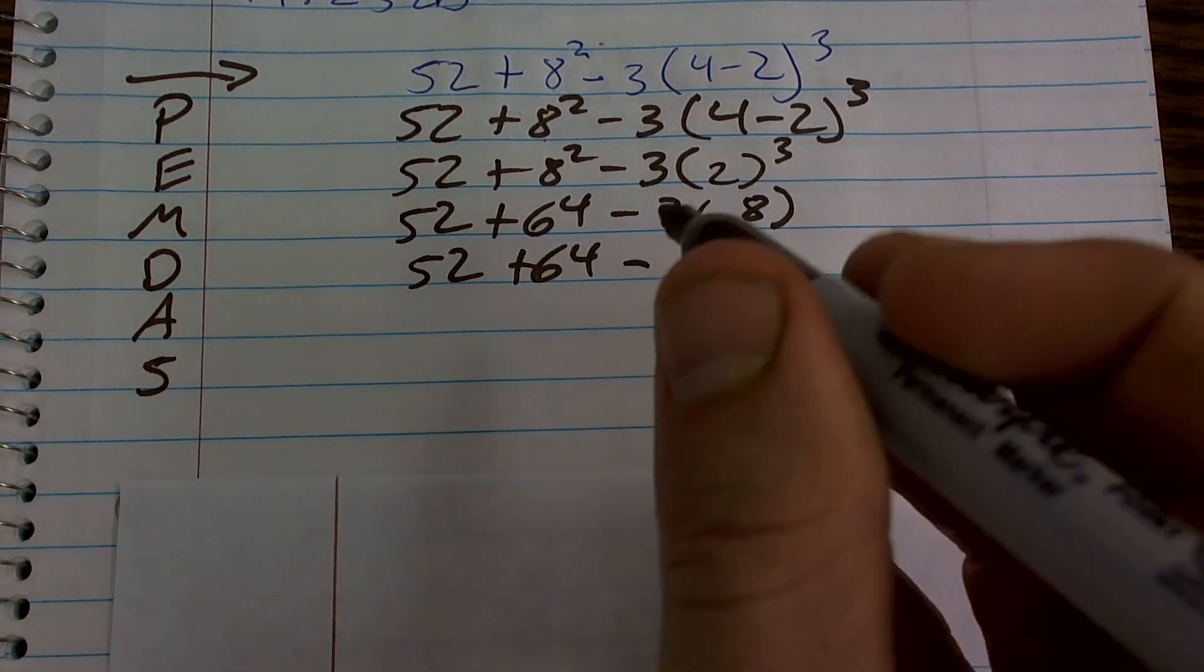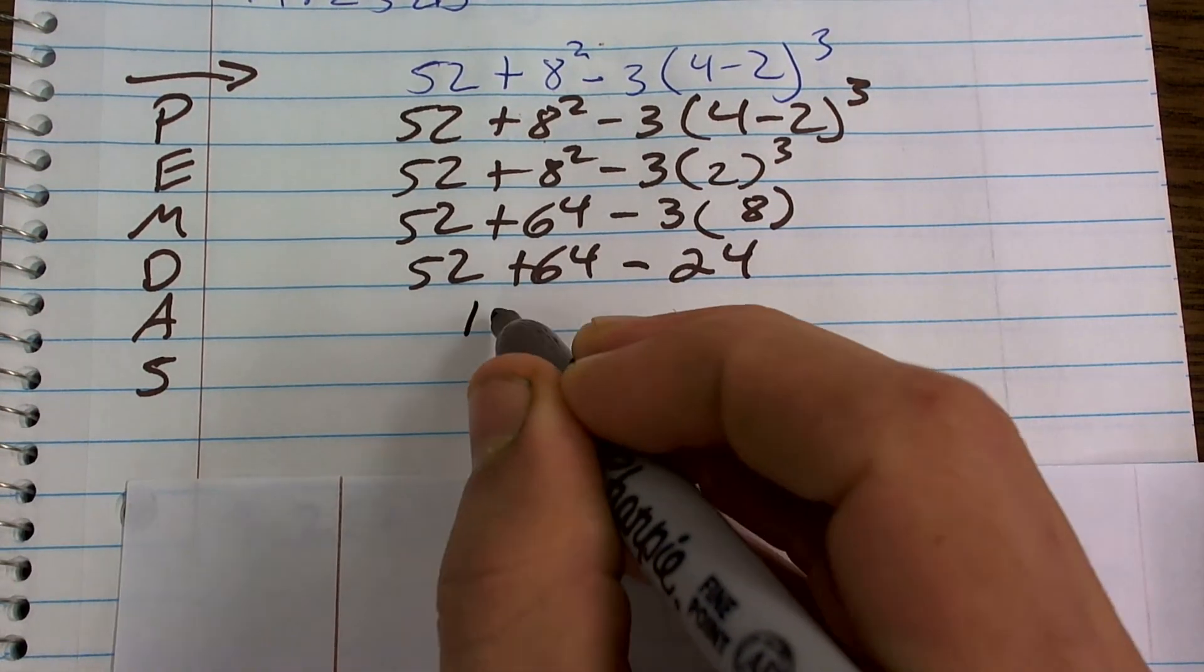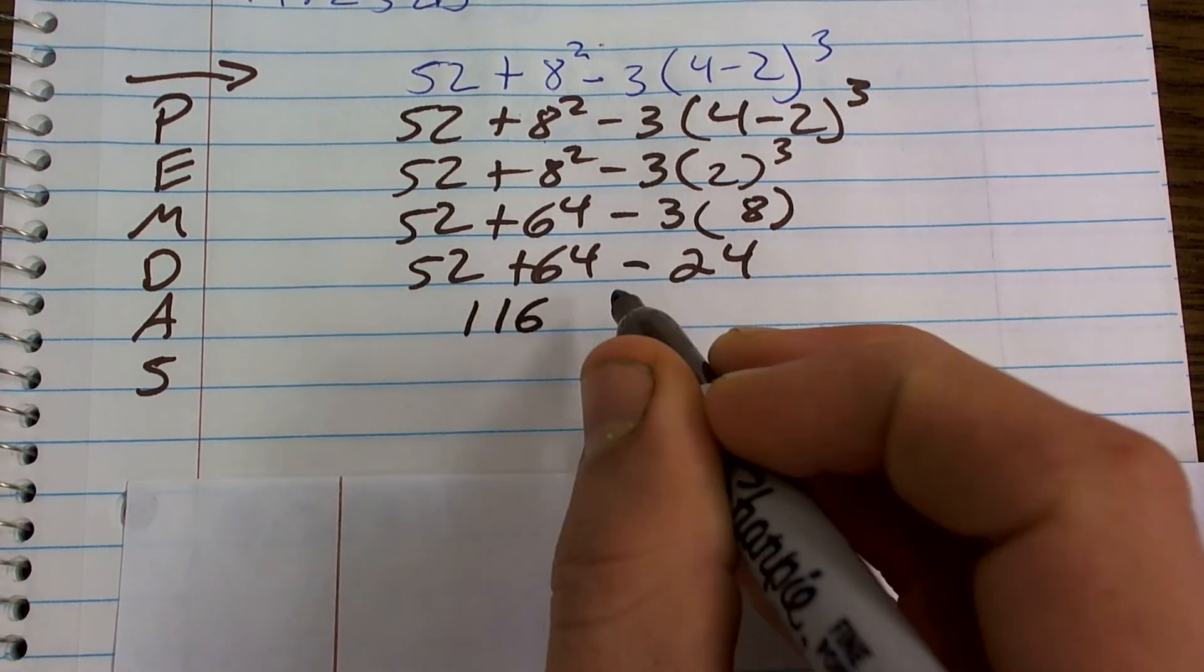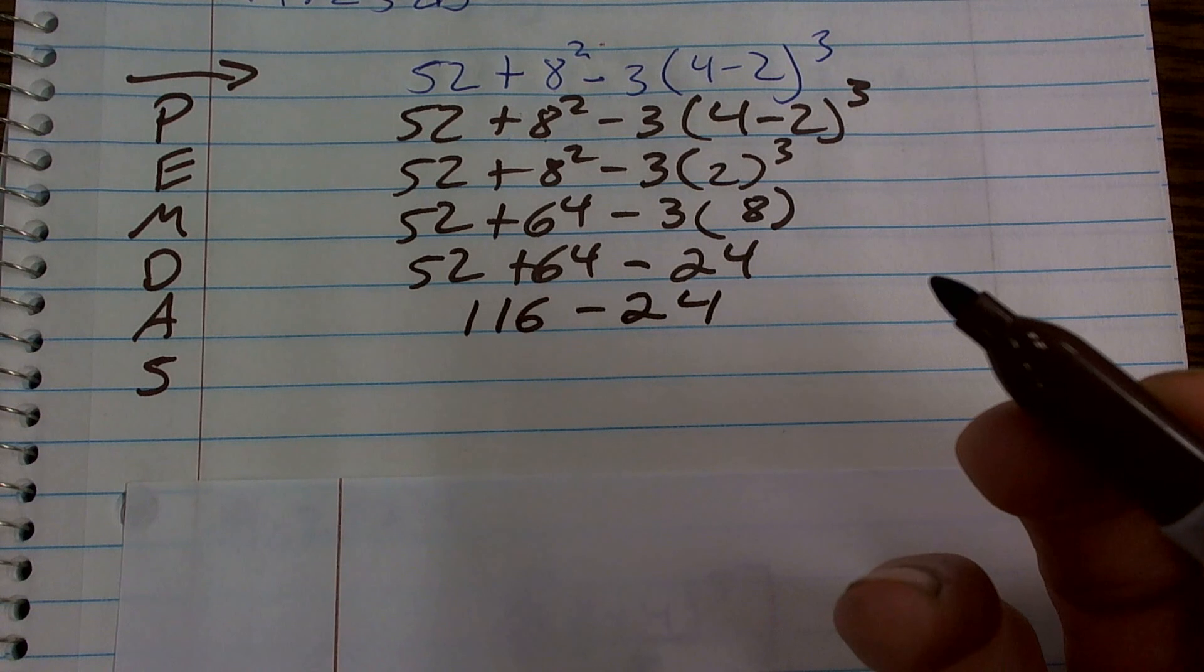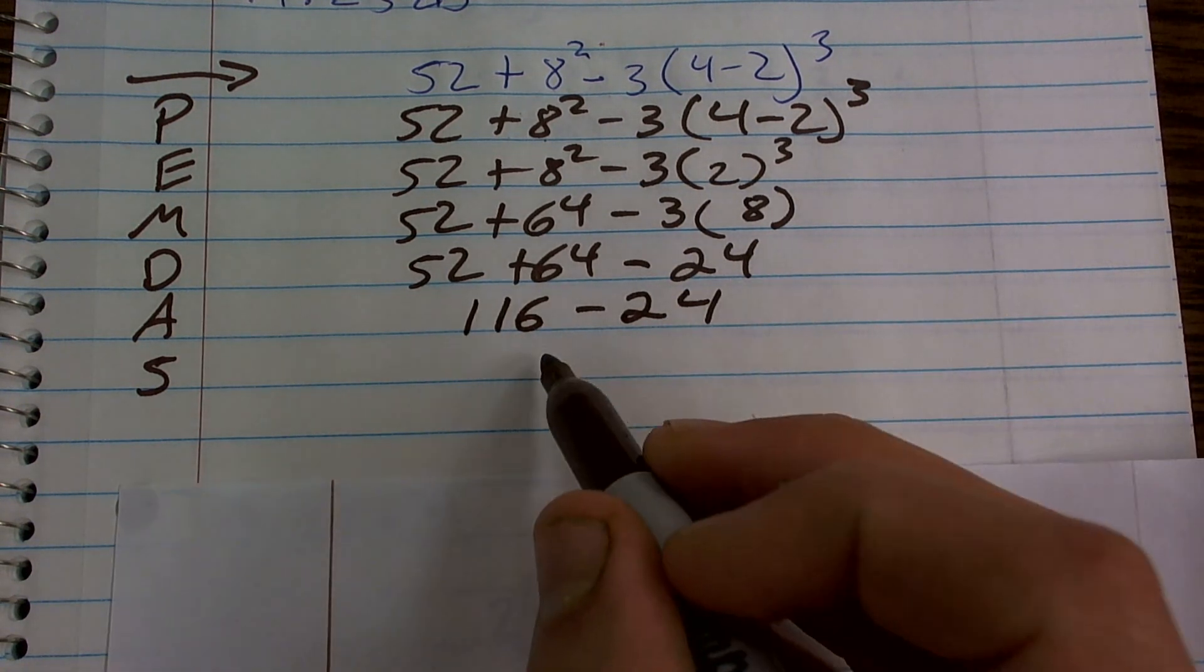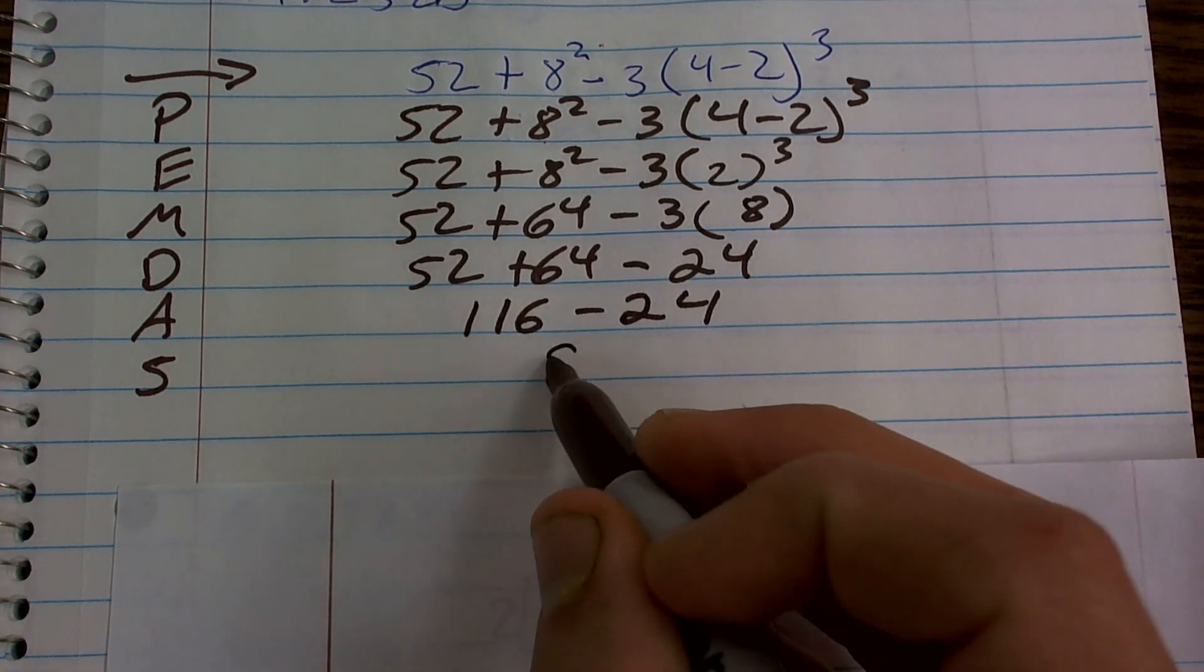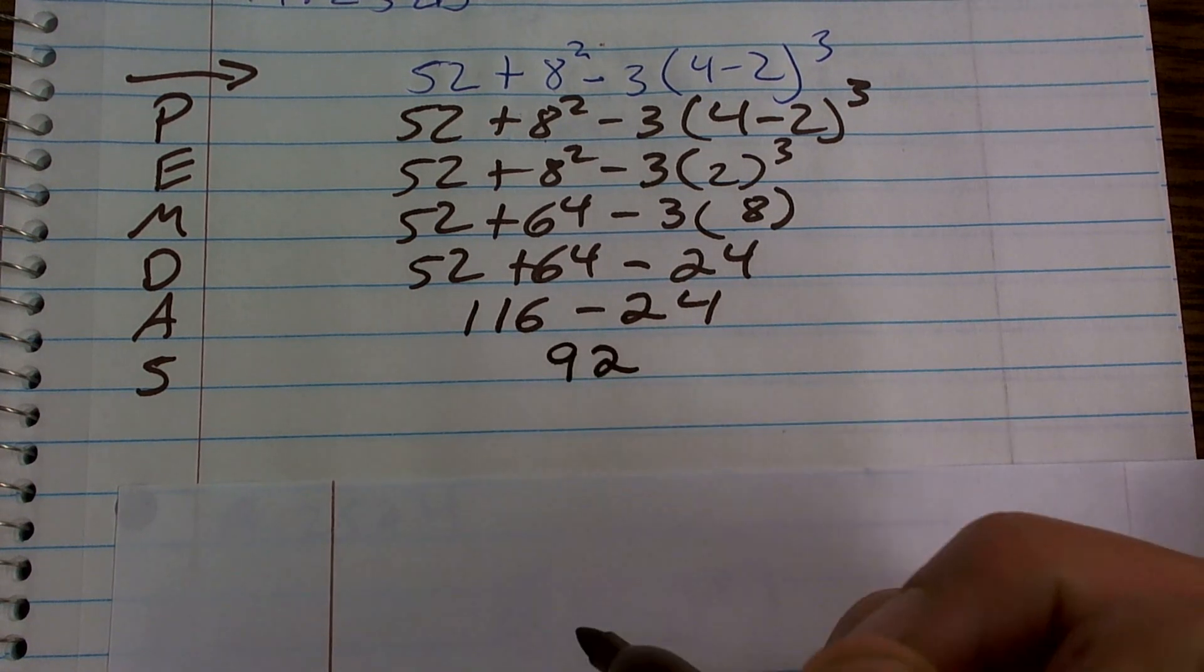So 52 plus 64 is going to be 116 and then minus 24, which is, when you add it in, so 116 minus 24 is going to give you 92.